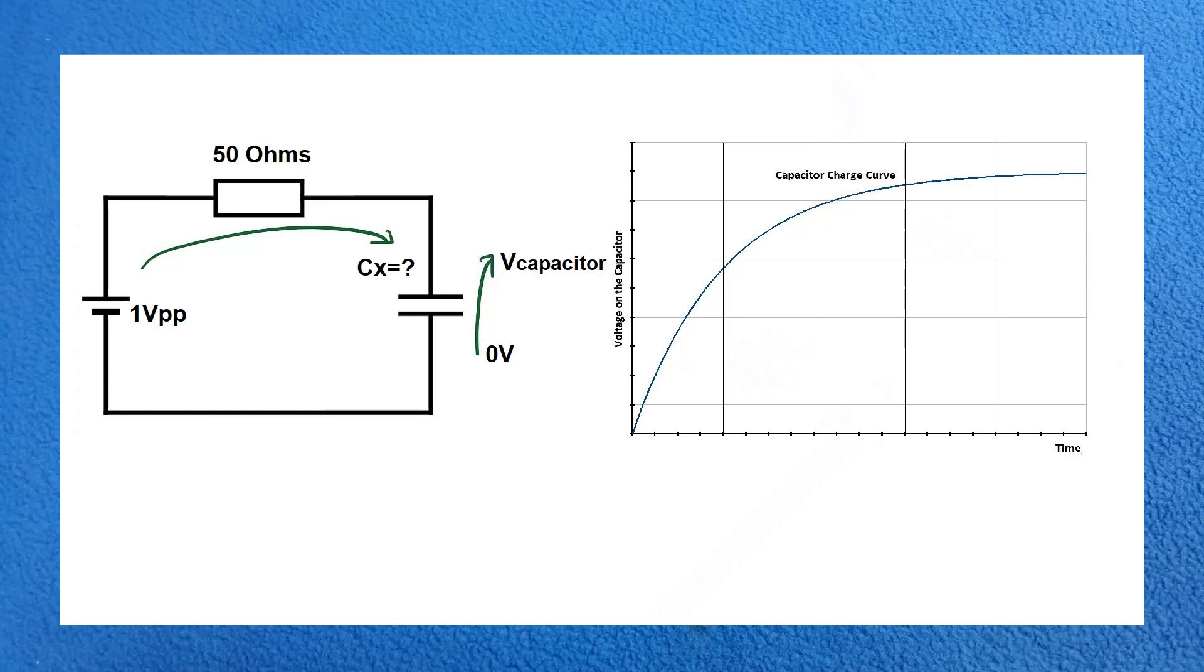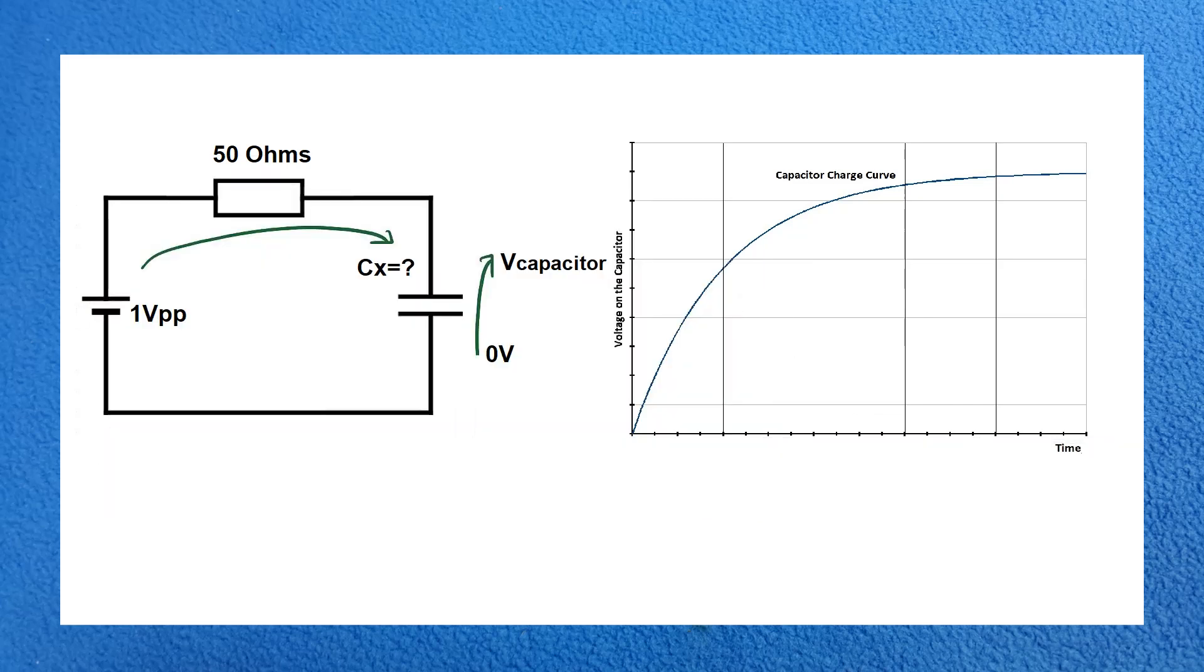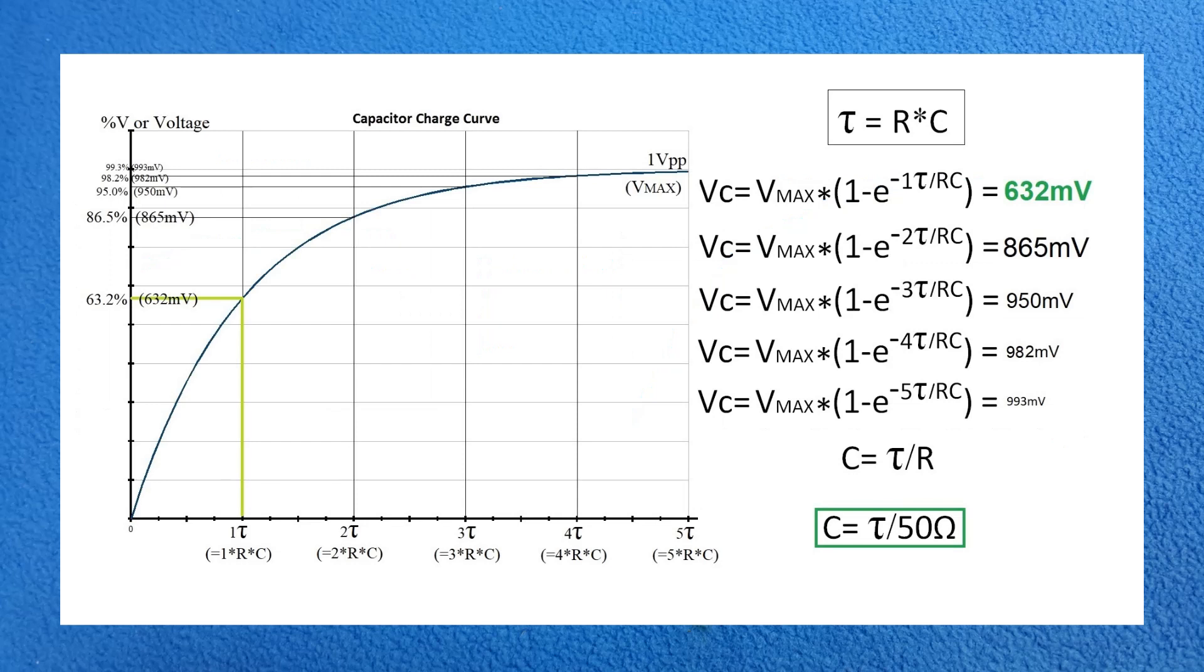What we are going to do is calculate the time it takes for the capacitor to charge to a certain voltage with a series resistor. The series resistor is the internal resistor from the function generator.